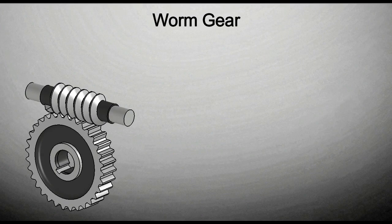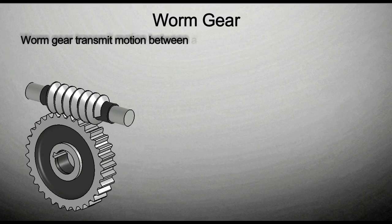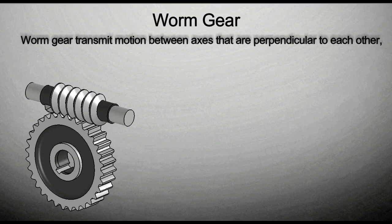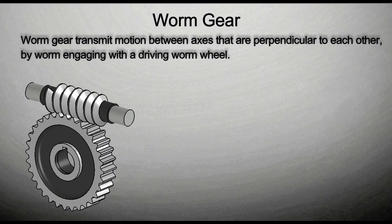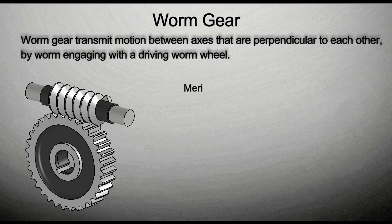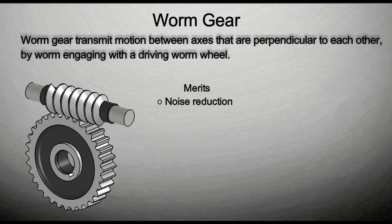Worm gear. Worm gear transmits motion between axes that are perpendicular to each other, by worm engaging with a driving worm wheel. Merits of worm gear are noise reduction and high load capacity.